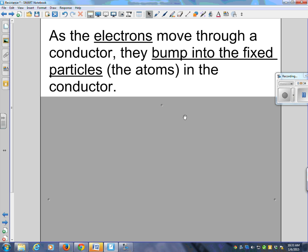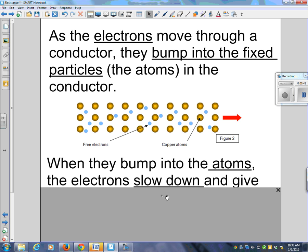The fixed particles, with my analogy in the hall, are those people that stand in the hallway causing trouble. You are the person trying to get to the gym. So as the electrons move through a conductor, they bump into the fixed particles, the atoms in the conductor. Do you guys have that picture?